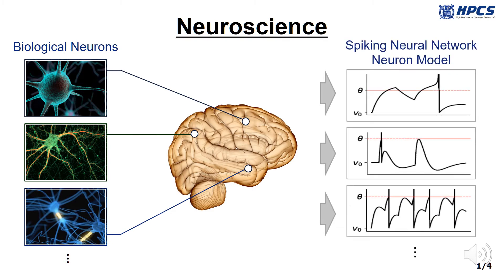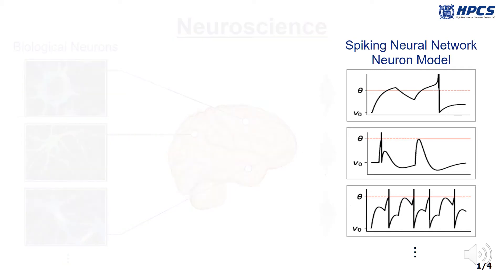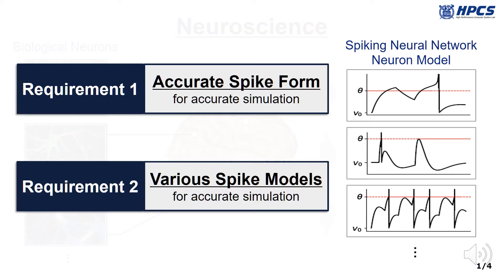However, to achieve such goals, we have several challenges for faithfully modeling neurons. First, each spike has to be as accurate as human neurons.